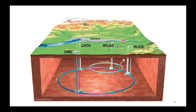Just to step back a little bit, this is a schematic of the Large Hadron Collider. It's a tunnel underground — 100 meters underground, a 27-kilometer tunnel — where protons are collided near the speed of light. At these four collision points there are four large detectors: CMS, LHCb, ATLAS, and ALICE. These are large international collaborations, and they detect what goes on in these collisions.